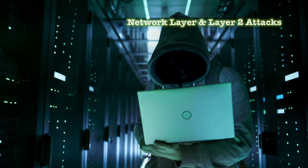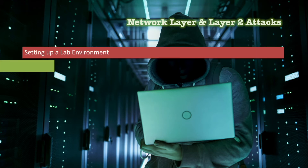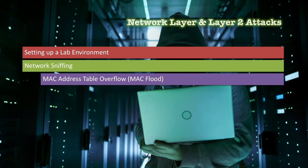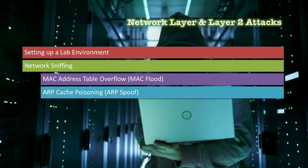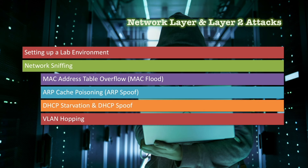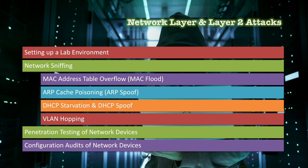In the Network Layer and Layer 2 attacks section, you're going to learn sniffing the network and gathering information from it. Then we'll see attacks and techniques to expand the sniffing surface: MAC address table overflow attack (also known as MAC flooding), ARP cache poisoning attack (also known as ARP spoof), DHCP starvation attack and DHCP spoof, and VLAN hopping techniques. We'll also see what else we can do on network layers in a pentest — cracking passwords of communication channels, compromising SNMP, and more.